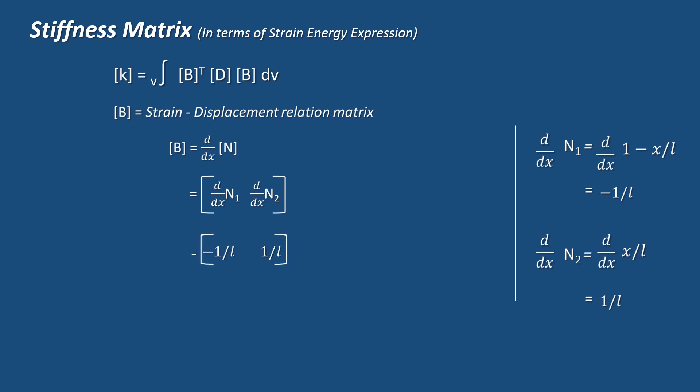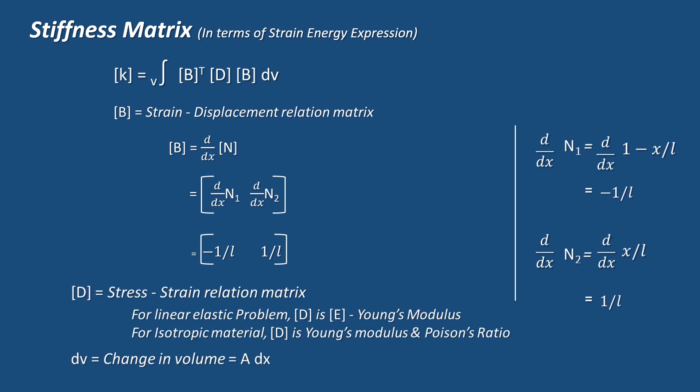Therefore, matrix B equals minus 1 by L, 1 by L. In the above equation, matrix D is stress strain relation matrix. We can simply call it as Young's modulus capital E. For isotropic material, matrix D is Young's modulus and Poisson's ratio, and dV is the change in volume A into dx.